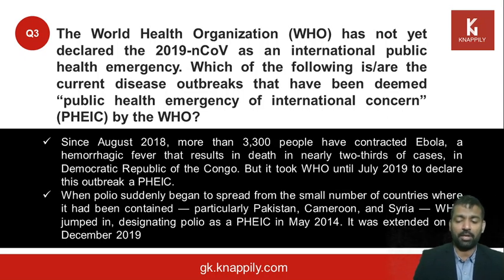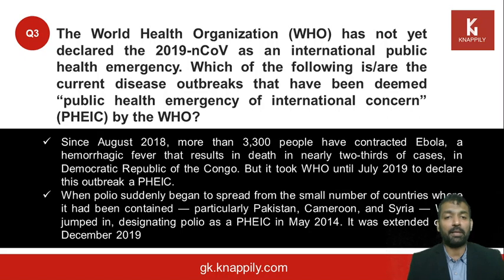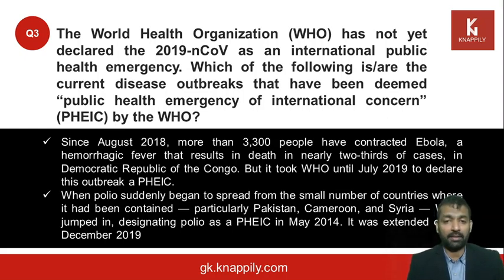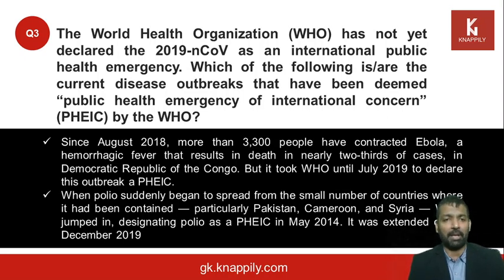In December 2019, the PHEIC status for polio was again extended, so right now both polio and Ebola are PHEICs. In Congo, the Ebola crisis could have been contained — we now have drugs for it. The bigger problem is that people do not trust medical workers; many healthcare workers have been killed, and there is a widespread belief that Ebola is a hoax spread by a political group, making it more of a psychological crisis than a medical one.